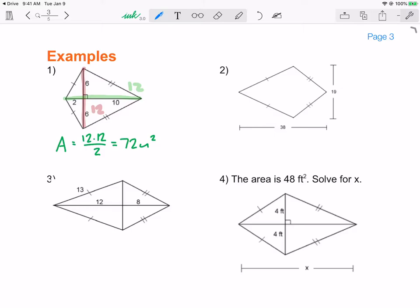Next one, it straight up gave me the diagonals. This length here is 38. This length here is 19. So my area is equal to 38 times 19 divided by 2, which gives me 361 units squared.